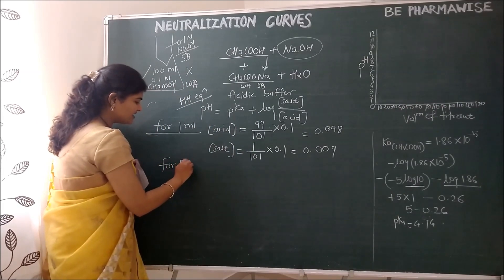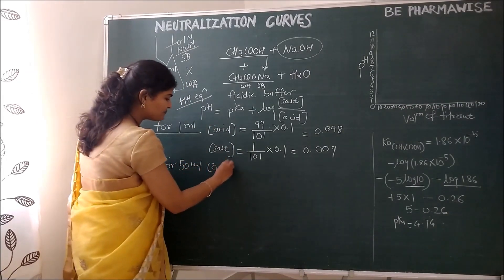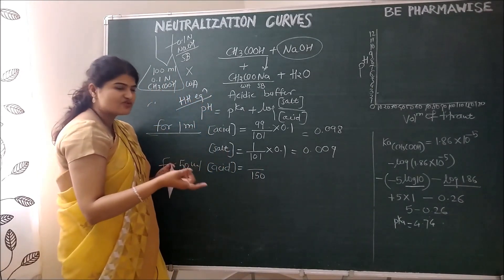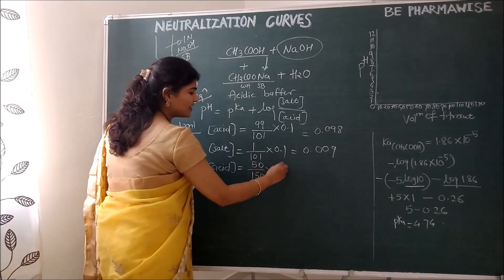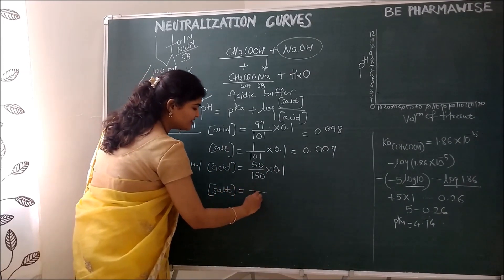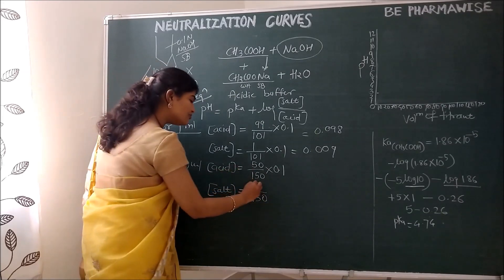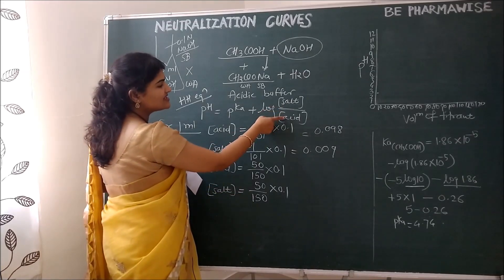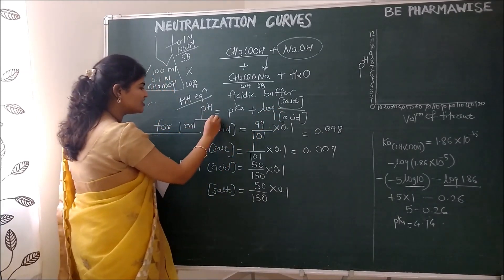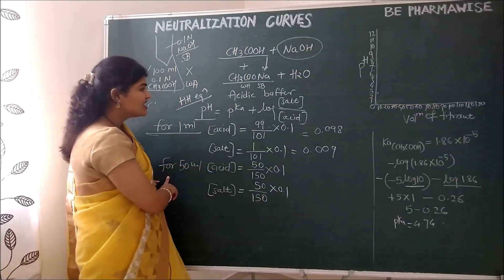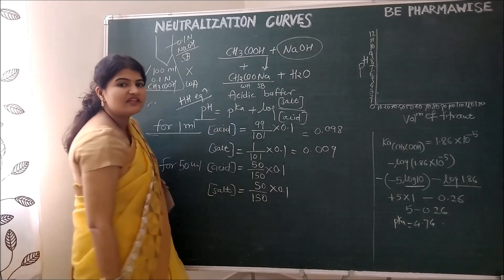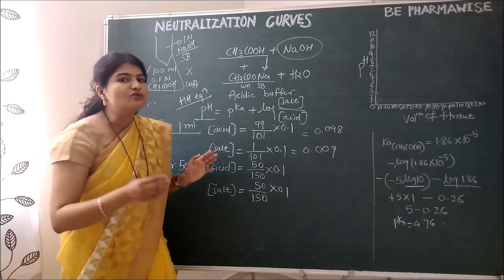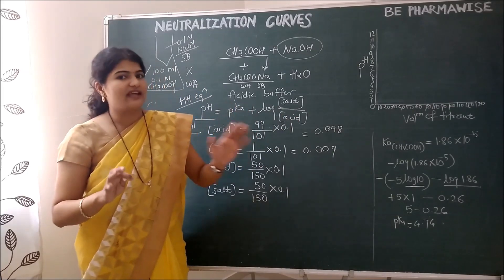Similarly, for 50 ml addition of NaOH, total volume is 150 ml. 50 ml of acid is neutralized, so remaining acid = (50/150) × 0.1. Salt concentration = (50/150) × 0.1. Both have the same concentration, so log(1) = 0. Therefore pH = pKA = 4.74 at 50 ml addition. You can take several points like this and observe that the graph grows very gradually during the titration.